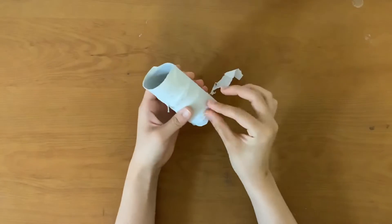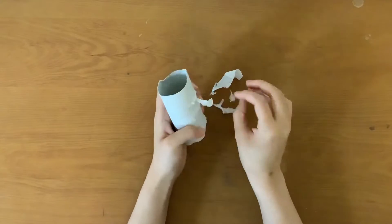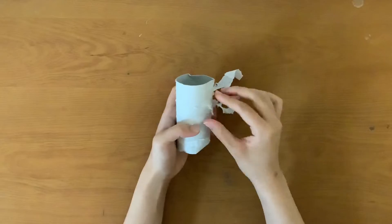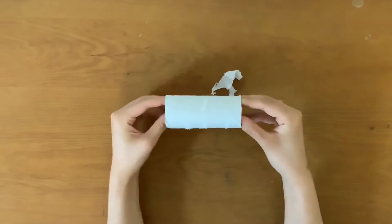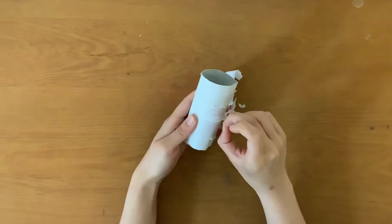The first step to this craft is to prepare our toilet paper roll. We'll start off by painting it white. Before you start painting make sure all the remaining toilet paper bits are picked off. This will ensure your paint goes on smooth.